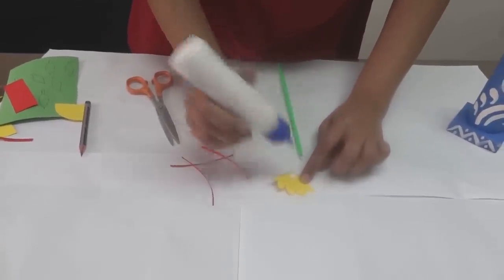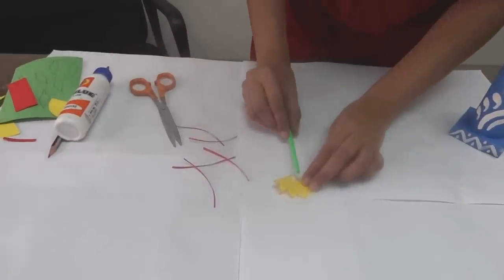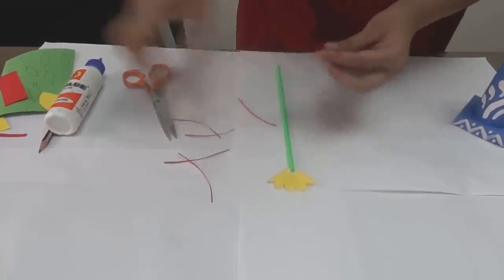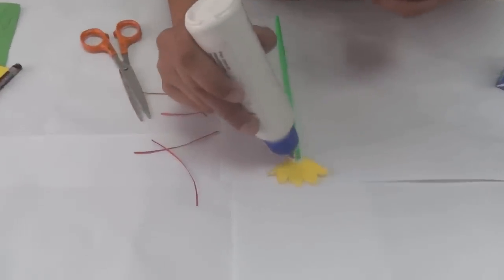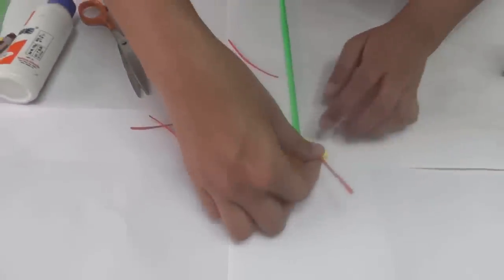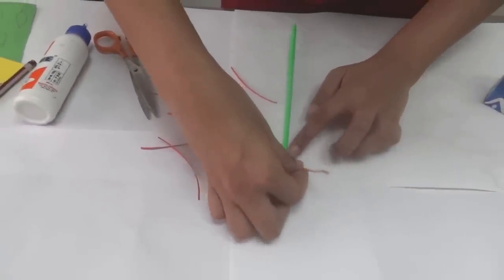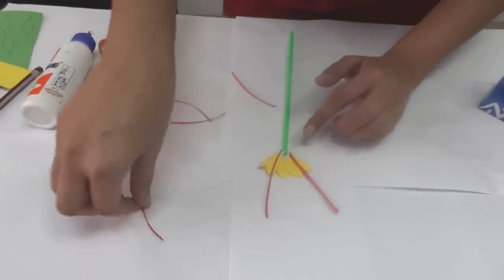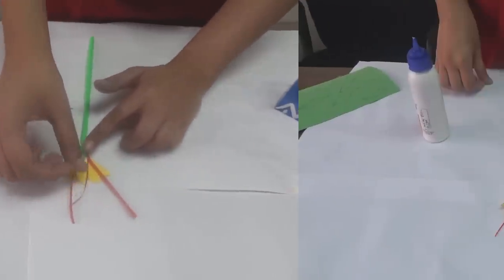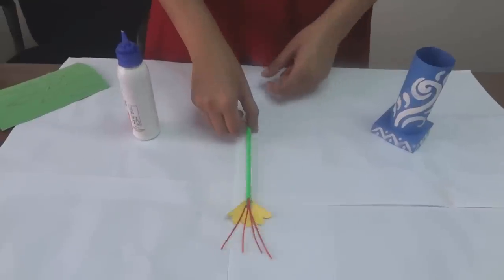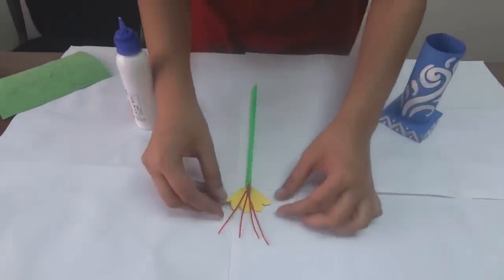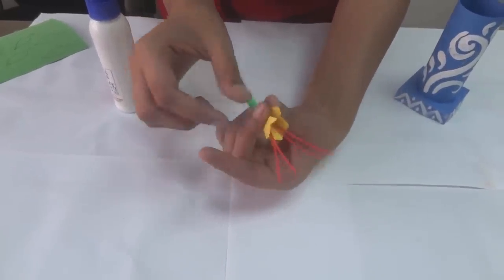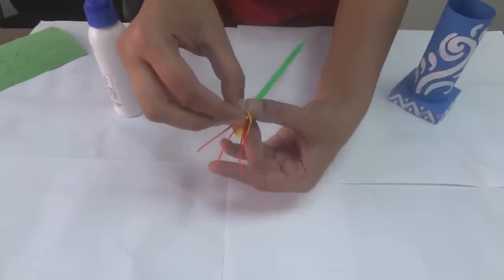With the help of Fevicol, first paste the stem in the center of our flower. Then again use some Fevicol to paste the stem in. Like this. So you will get something like this. Now you have to roll this flower. Like this. And paste the corners.